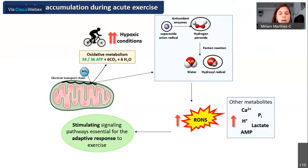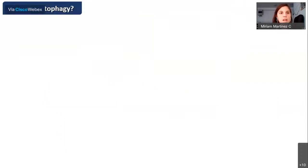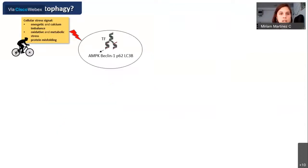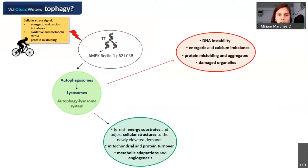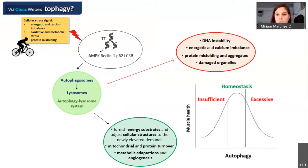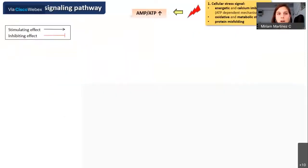One of the most important pathways is the autophagy pathway. Autophagy is a cellular energy-dependent process by which, under a cellular stress signal, it is activated to furnish energy substrates and adjust cellular structures for mitochondrial and protein turnover, metabolic adaptation, and angiogenesis. It is very important to achieve a homeostatic state to avoid detrimental effects on skeletal muscle health.